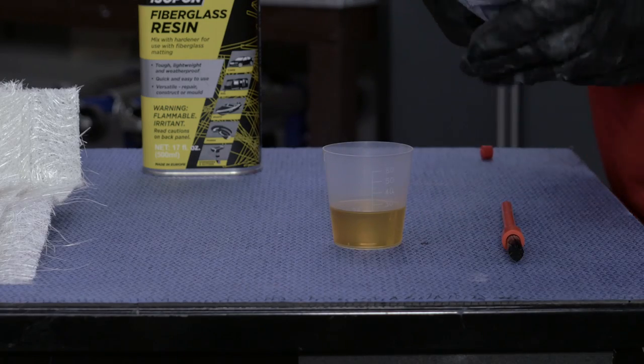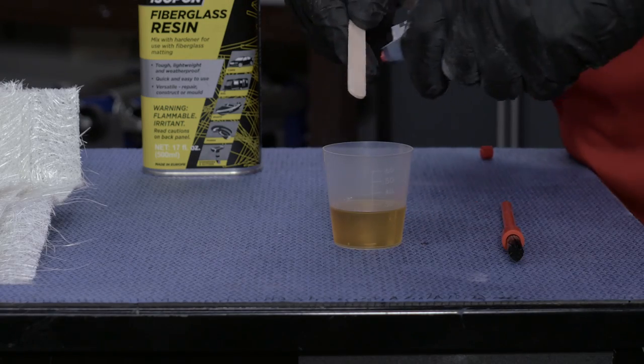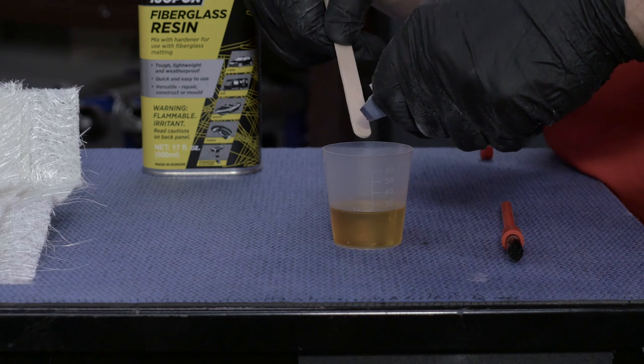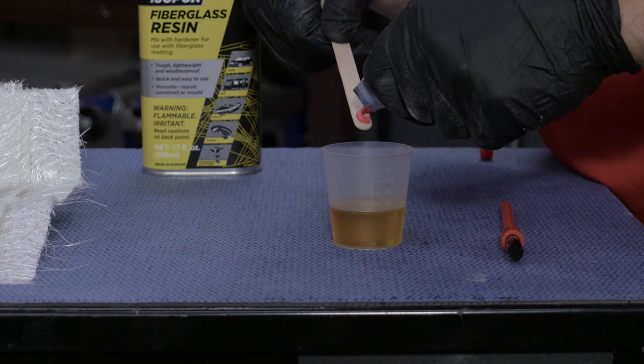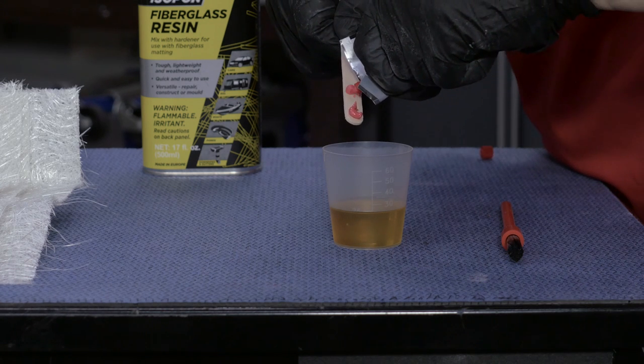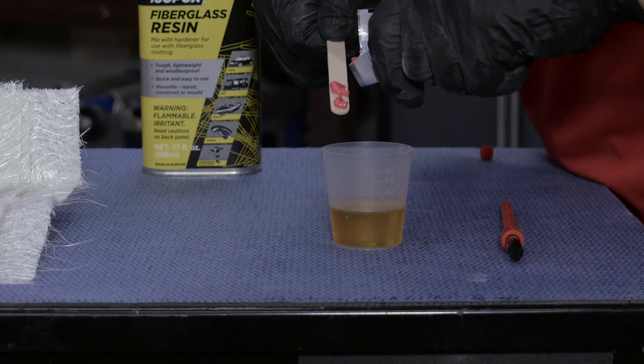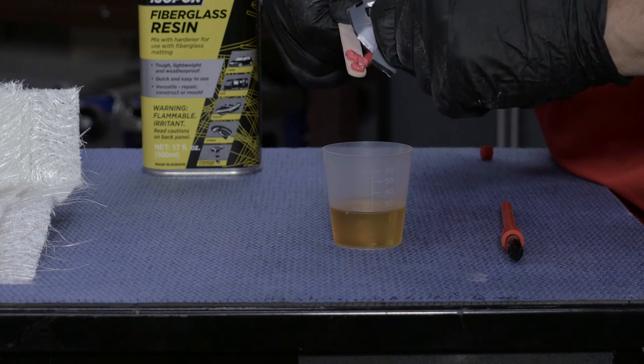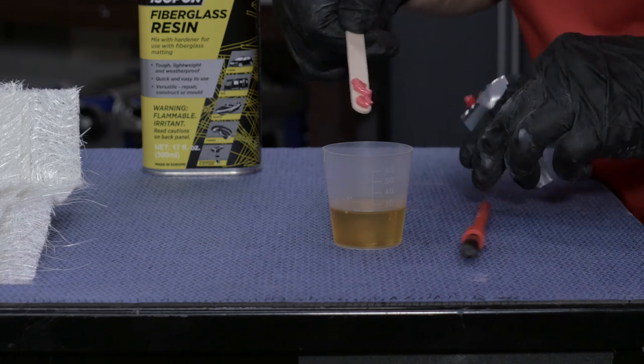The correct ratio of resin to hardener is one pea-sized dollop per 10 milliliters of resin. We've got 20 milliliters of resin, so we're measuring out two dollops onto the mixing stick and stirring thoroughly.